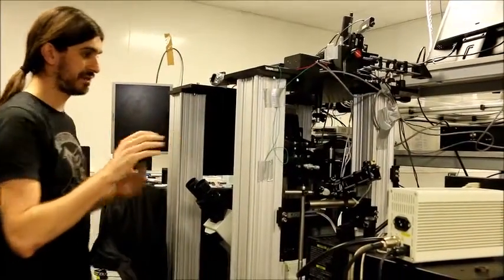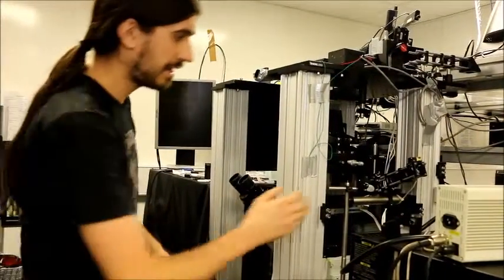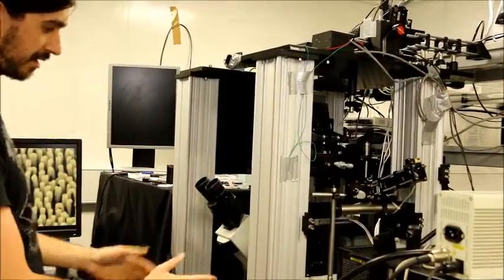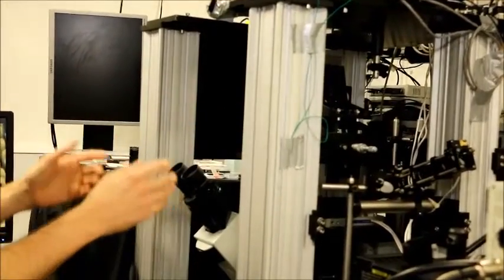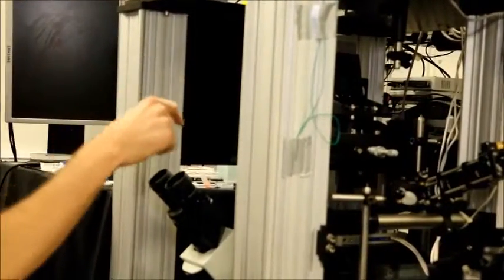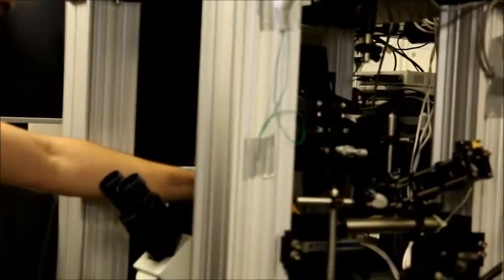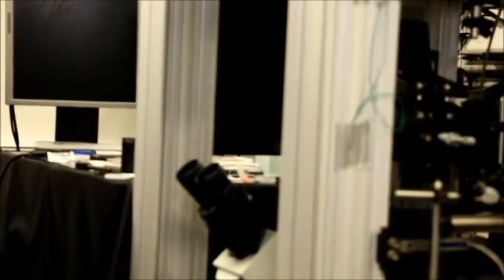And then we have an optical table which is used to recombine all these beams and control the power and polarization. And then we send these beams into this microscope. It's a commercial inverted microscope on which we built a non-inverted microscope. The sample will be sitting there, and then the light will be detected in this black box that we keep in the dark to prevent light from coming in.